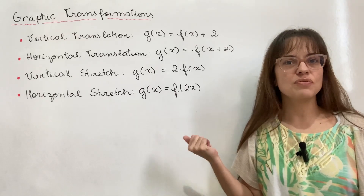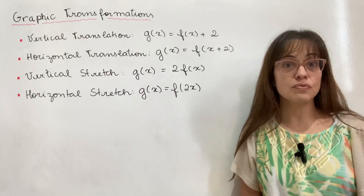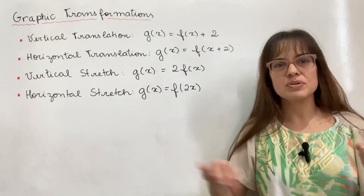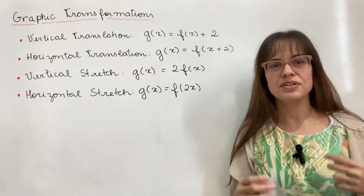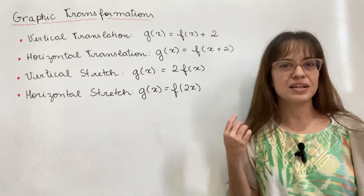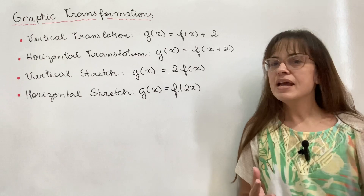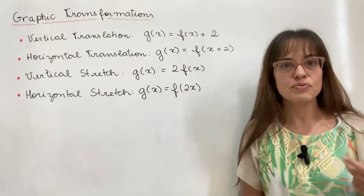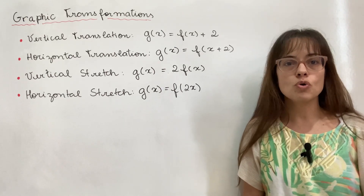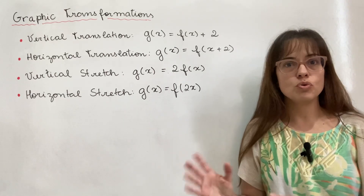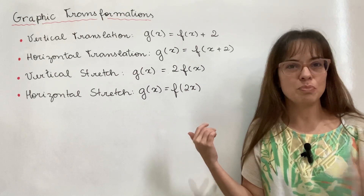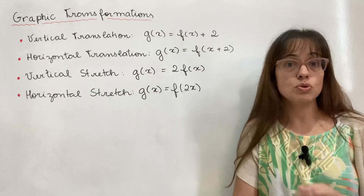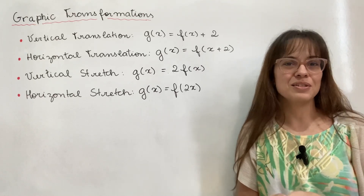I've mentioned graphic transformations of functions in at least three videos so far, and every time I make the same comment about how the horizontal axis is weird and annoying and does the exact opposite of what you would expect. I don't feel like explaining why this happens in every single video, so today I'm going to show you the parts where I said those things and then finally explain why the horizontal axis is annoying.